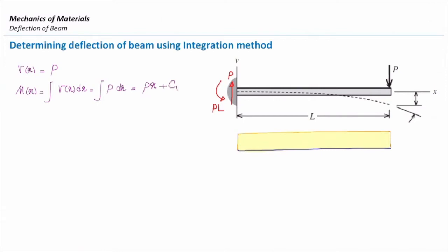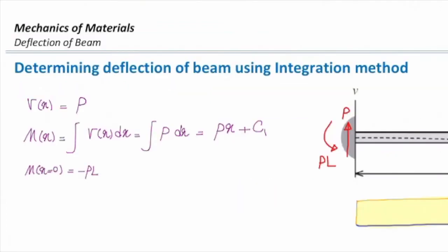We shouldn't forget that constant. How can I determine it? At X equal to zero — at the very left end — we know the initial moment. It's negative PL. So I set M at X equal to zero equal to negative PL. Px vanishes and C1 equals negative PL.